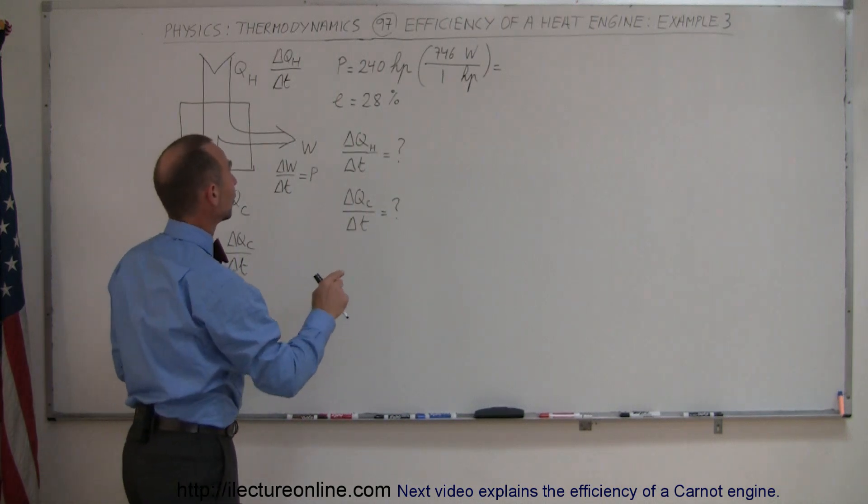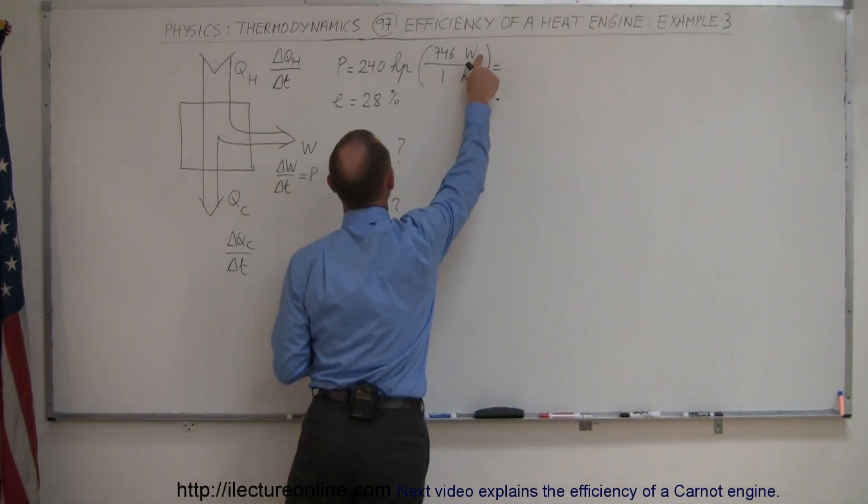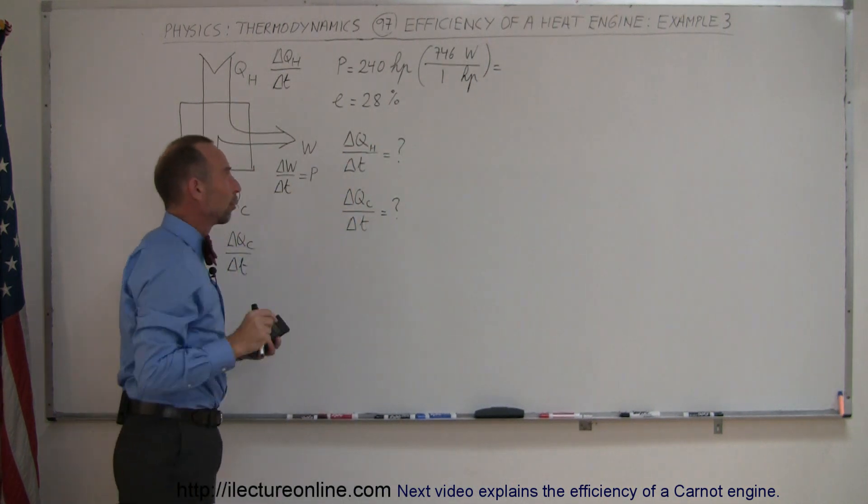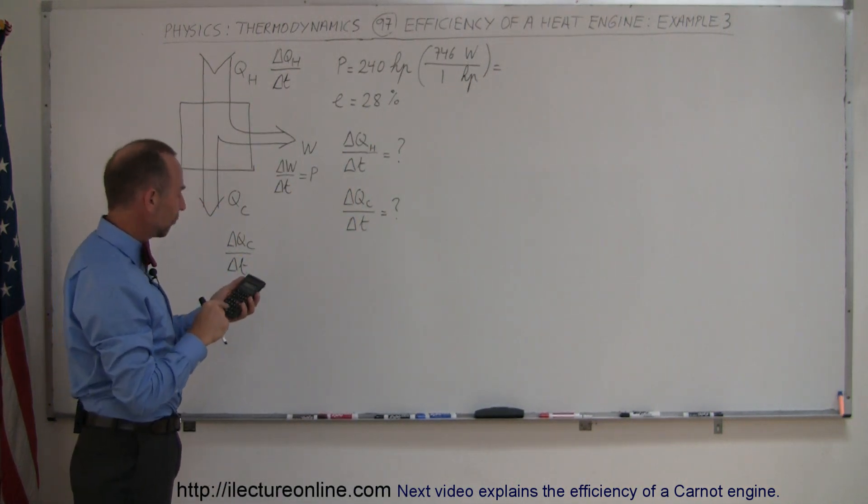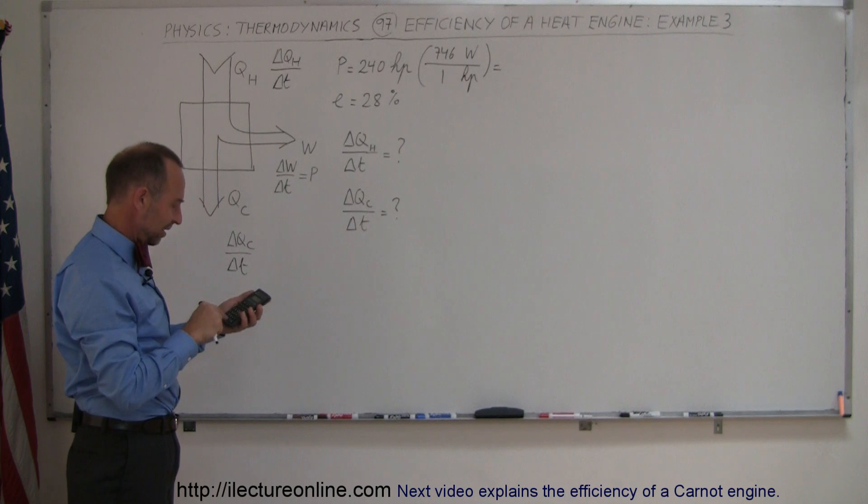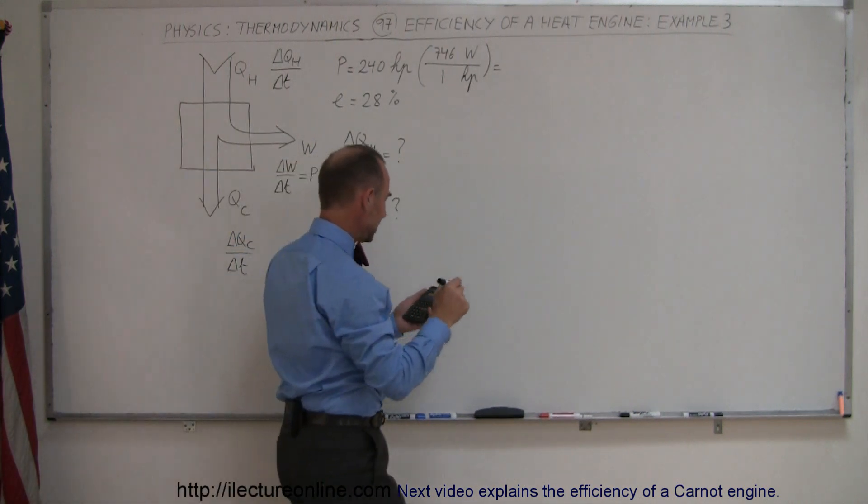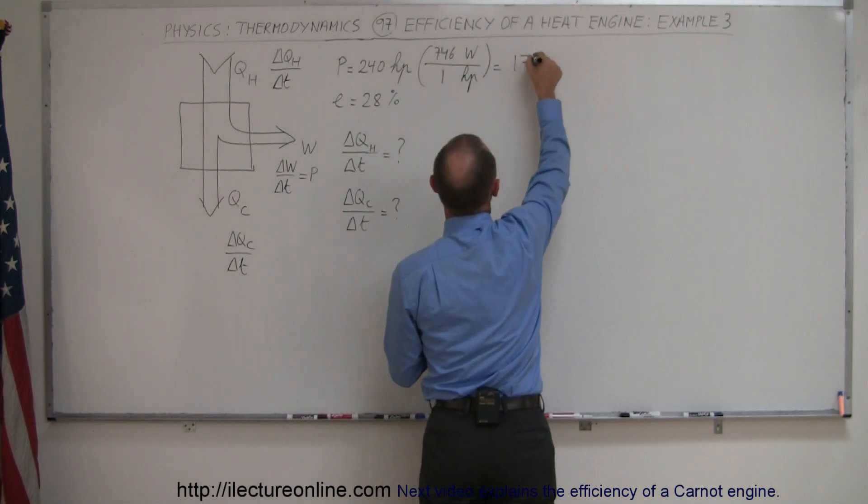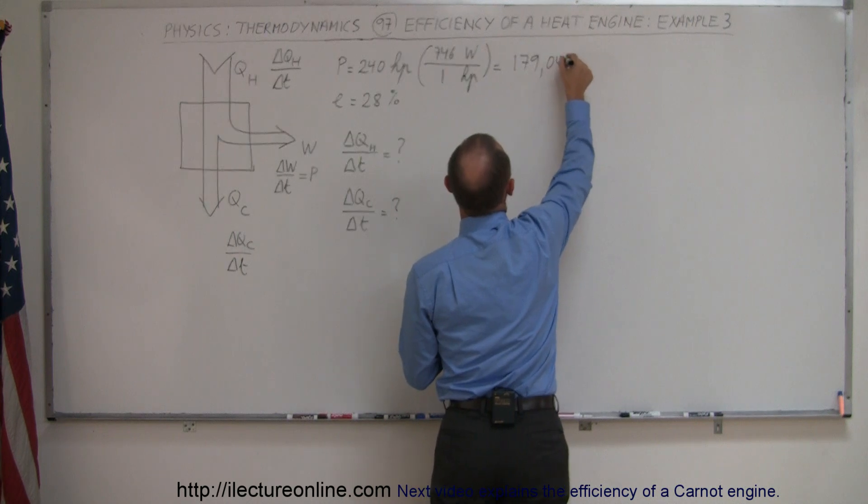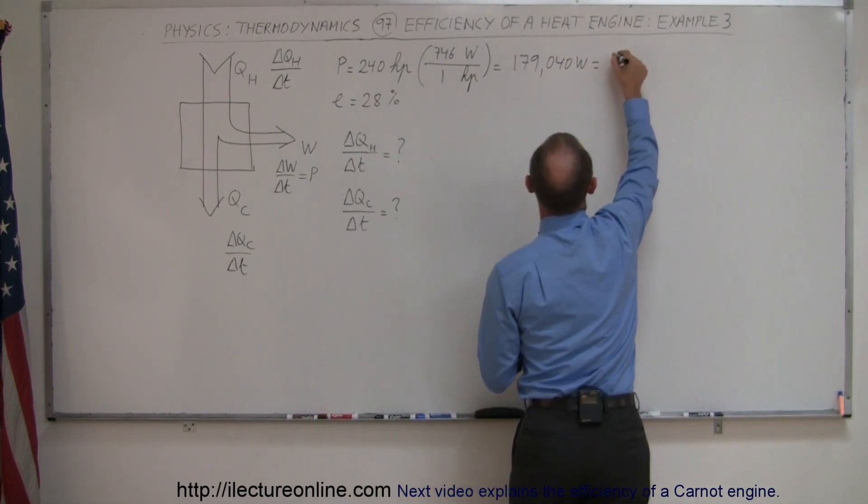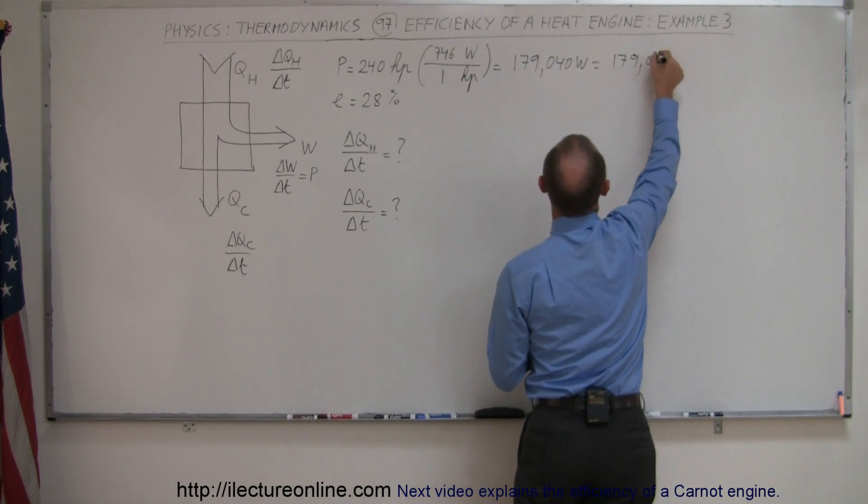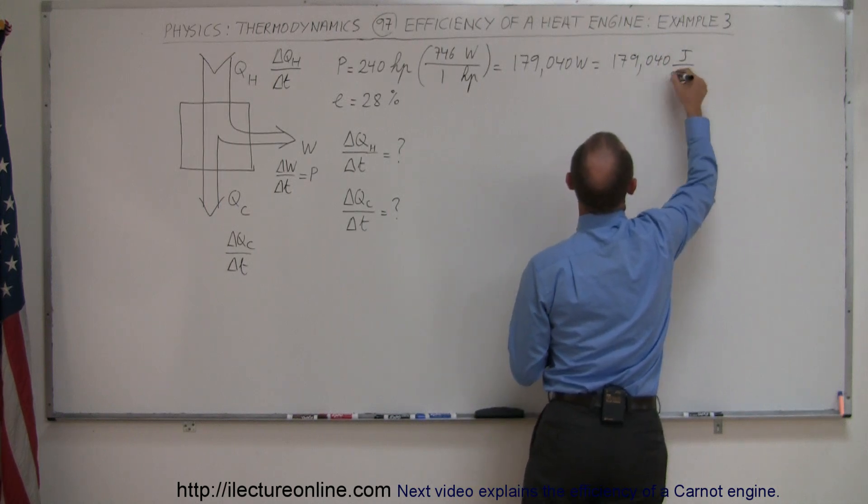240, now be careful, don't confuse the unit watts with the W for work. So 240 times 746 is equal to 179,040 watts, which is 179,040 joules per second.